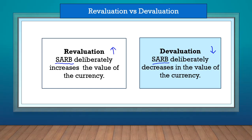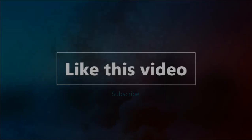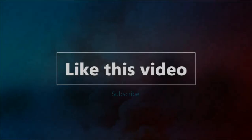So to summarize: appreciation and depreciation occur because of demand and supply, whereas revaluation and devaluation occur because of deliberate action by the South African Reserve Bank. Thank you, and I'll see you next time.